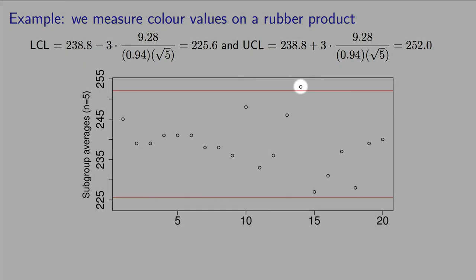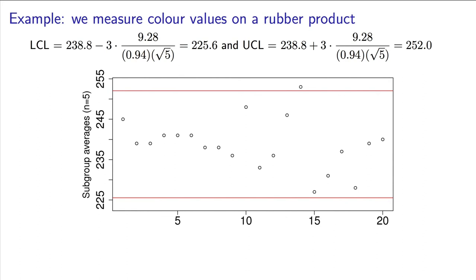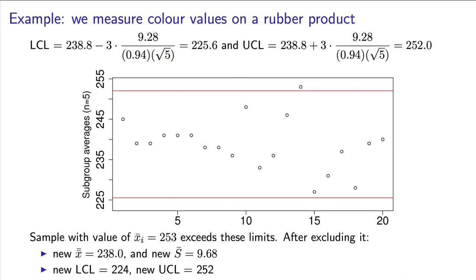Notice that one of the subgroups, 253, exceeds the limits. We exclude that single subgroup, and now we have 19 subgroups left. Recalculate the X double bar, recalculate the S bar, and then go recalculate our lower and upper control limits. This time we get 224 and 252 respectively. They don't change by very much. It is not uncommon that we have to go through one or two iterations of this process of pruning out bad data to get a clean data set that represents the upper and lower control limits fairly.